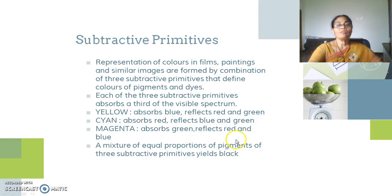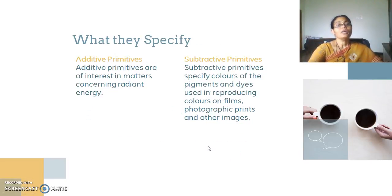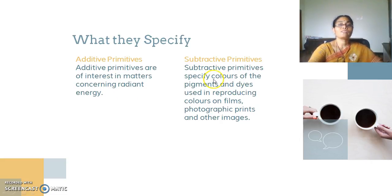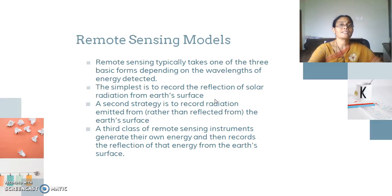A mixture of equal proportions of pigments of the three subtractive primitives yields black. The additive primitives are of interest in matters concerning radiant energy. The subtractive primitives specify colors of the pigments and dyes used in reproducing colors in films, photographic prints, and their images. These are mainly used as remote sensing models.